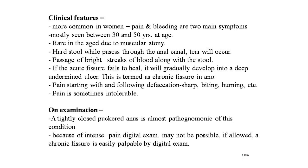This condition is more common in women. Pain and bleeding are the two main symptoms, mostly seen between 30 to 50 years of age, and it is rare in old age due to muscular atony. A hard stool passing through the anal canal causes a tear, with passage of bright streaks of blood along with the stool. If the acute fissure fails to heal, it gradually develops into a deep ulcer — termed chronic fissure in ano. The pain starts with defecation, is sharp, biting, and burning, and is sometimes intolerable, described as a cutting pain.